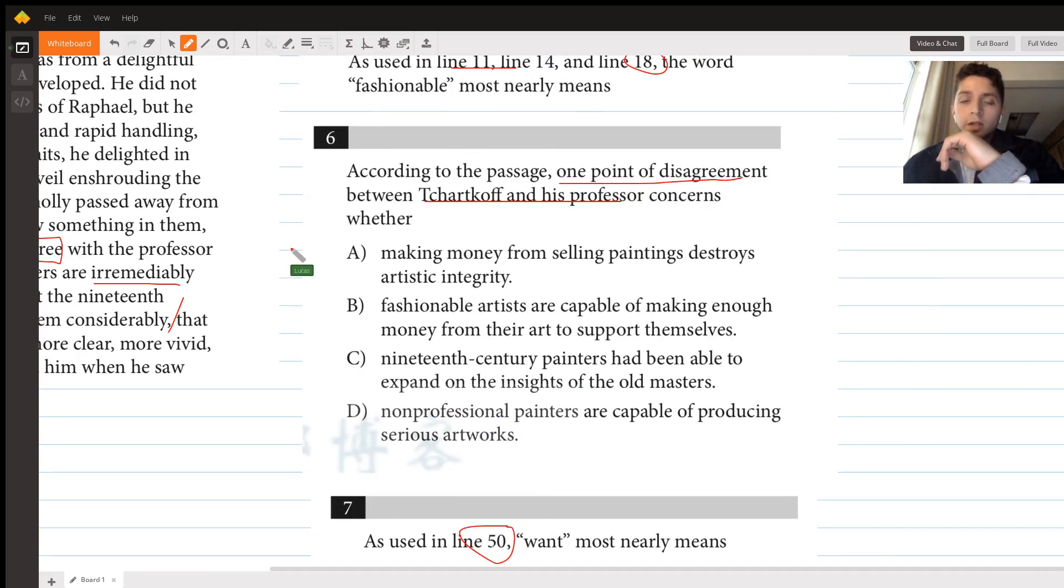Let's go to our answer choices. A says making money from selling paintings destroys artistic integrity. This one might catch a few students because that's sort of like the vague essence or idea of the passage—there's that conflict where Tcharkoff has to decide: does he want to make money or does he want to preserve his artistic integrity? The issue is that we don't have a strong text to support this.